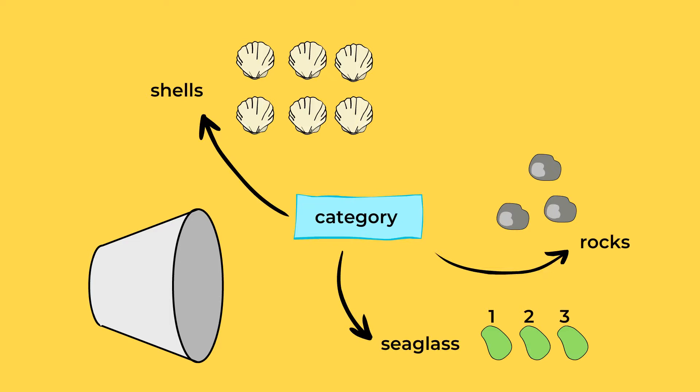And here are the shells. Okay, let's make sure we say one number for each shell. One, two, three, four, five, six. There are six shells.